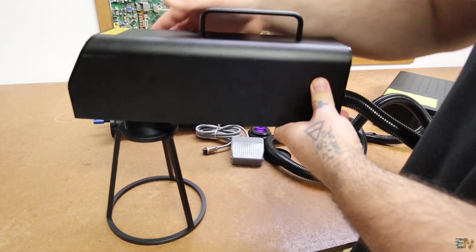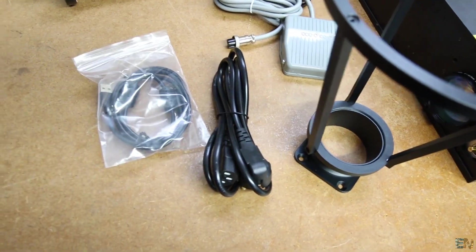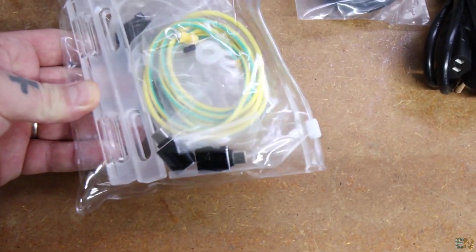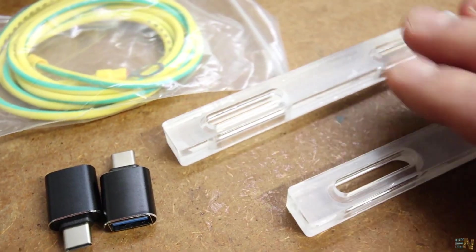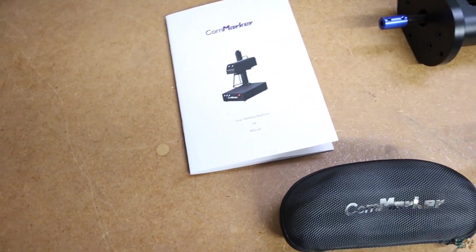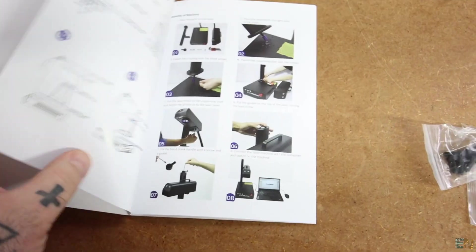You also get the power and data cables, some safety glasses, some USB adapters, grounding wires and these acrylic alignment brackets. You also get the user manual and USB drive with all the needed software and settings.